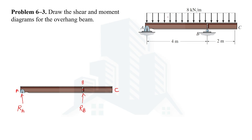Other than the reactions, we have a uniformly distributed load (UDL) of 8 kN per meter. This UDL can be converted to a point load by multiplying the total length of the beam, which is 6 meters: 8 × 6 = 48 kN. This equivalent point load acts at the midpoint of the beam, so the distance from A to this point load is 3 meters.